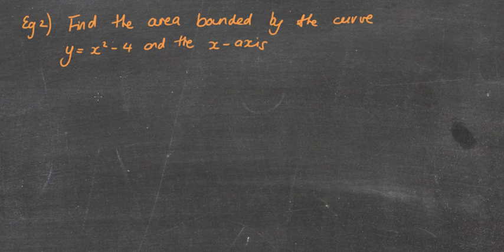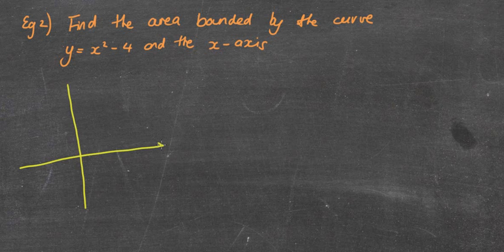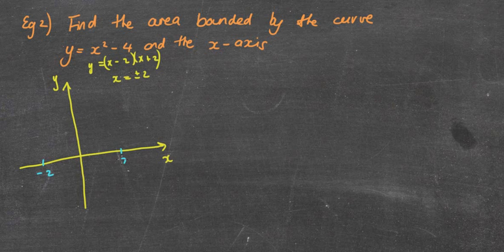Find the area bounded by the curve y = x² - 4 and the x-axis. So again, I'm just going to do a quick rough sketch to see what it's going to look like, a little bit easy, this one, so y = (x - 2)(x + 2). It's the difference of two squares, x = ±2, so I can see it's going to cut through -2, it's going to cut through 2, it's a positive graph, it goes down to -4.